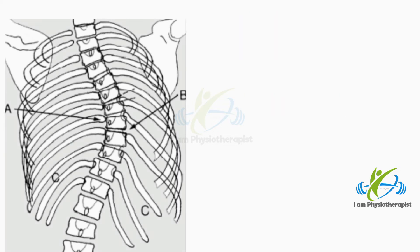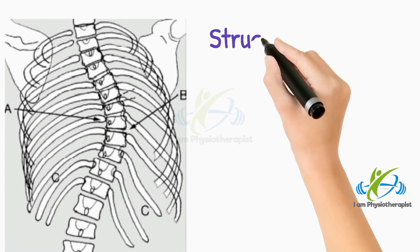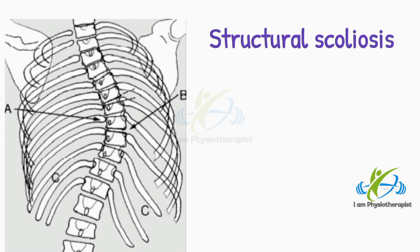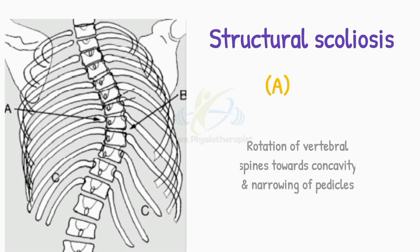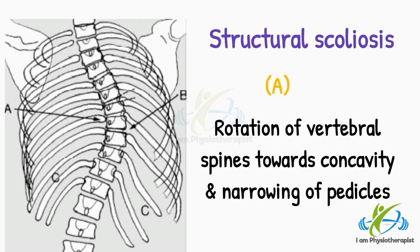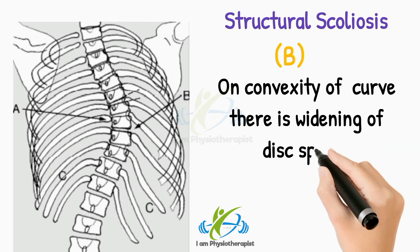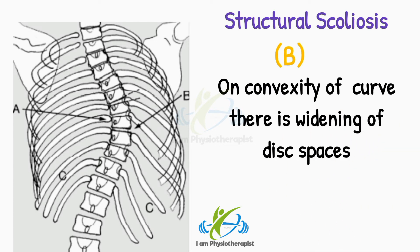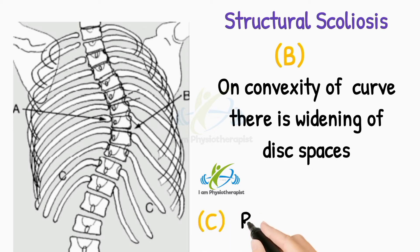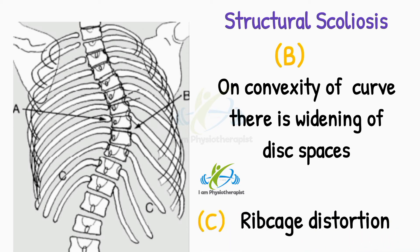Note the presence of any structural scoliosis. This is associated with rotation of the vertebral spines towards the concavity, indicated by point A, and narrowing of pedicles. On the convexity of the curve, there is widening of disc spaces, indicated by point B. In the thorax there is ribcage distortion, indicated by point C.